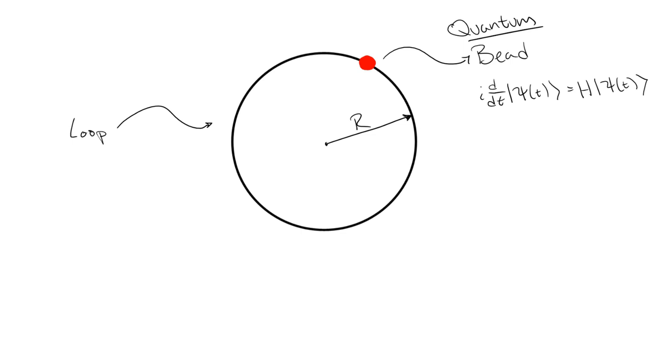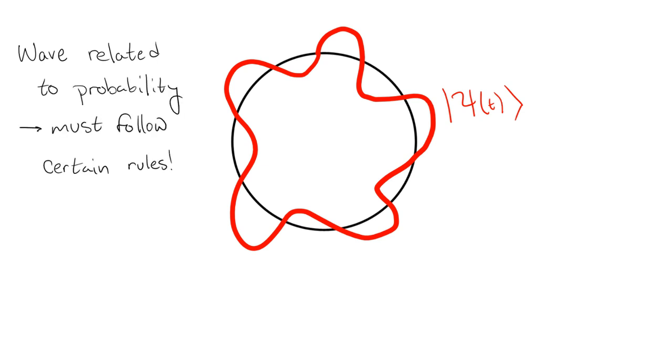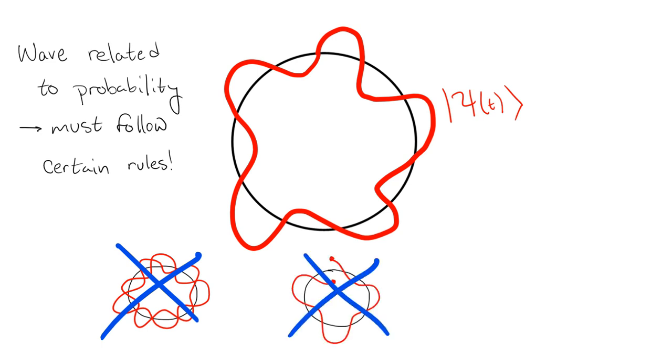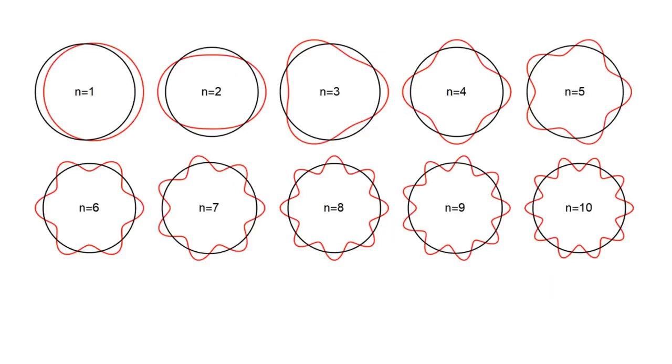We know that the state of this bead can be thought of as a wave where each point on the wave is related to the probability of finding the bead at that point. This wave must abide by a few rules for it to make sense in the case of it living on a circle. First, it doesn't make sense for the same point to have two different probabilities, so the wave can't take two different values at the same point. Second, we want the probability distribution to be continuous, so it can't be cut, which means that it has to end where it started. Third, we can't have any kinks or sharp points on it. So, in the end, we're left with a set of waves which describe our system where the only real difference between them is how many peaks they have.